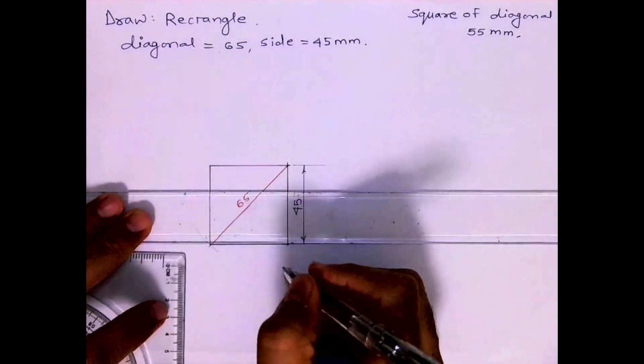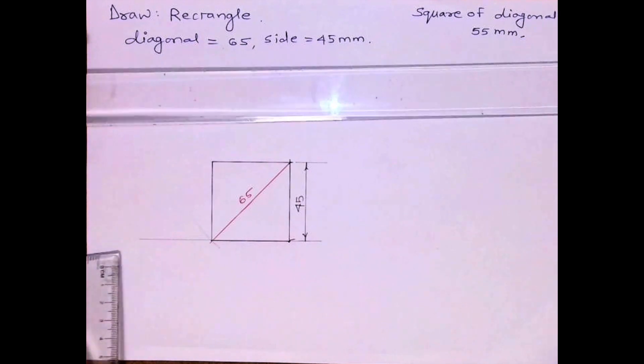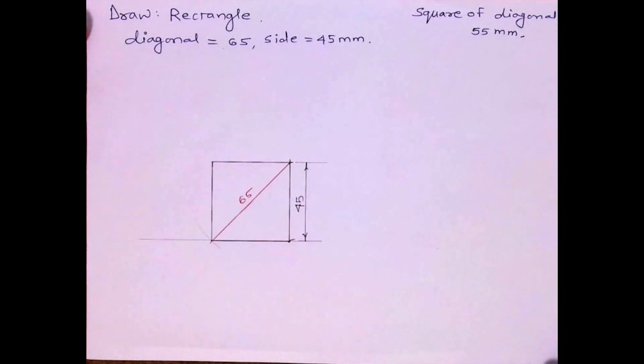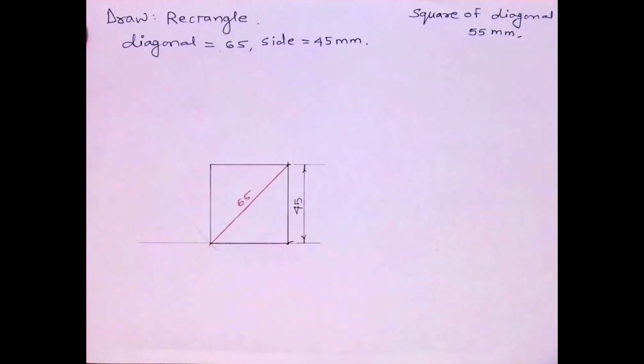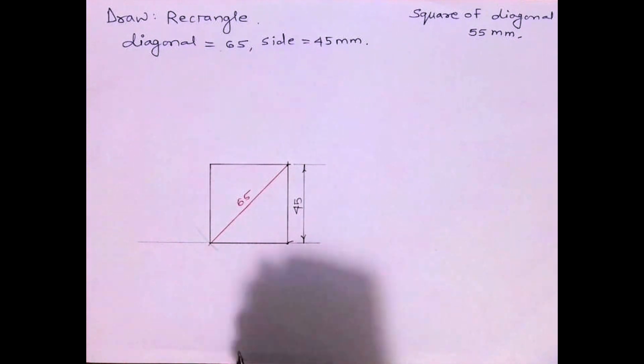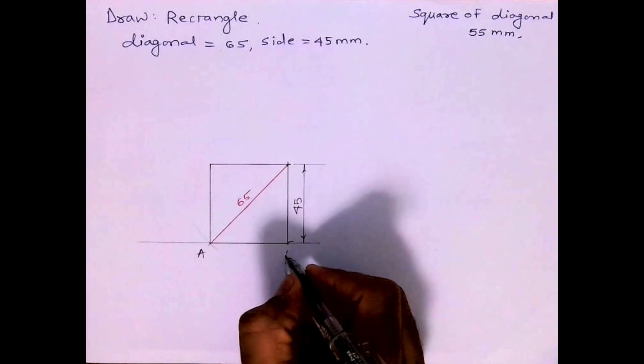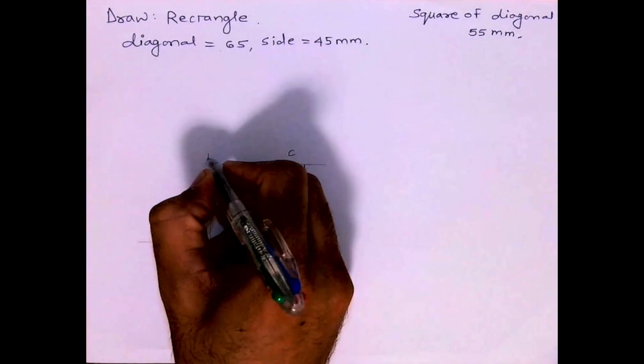So we are done with required rectangle. This is rectangle ABCD.